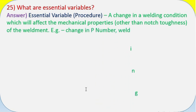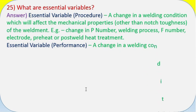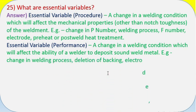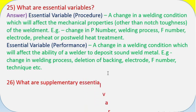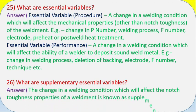Question 25: What are essential variables? Answer: Essential variable procedure - a change in a welding condition which will affect the mechanical properties other than notch toughness of the weldment, e.g., change in P number, welding process, F number, electrode, preheat, or post weld heat treatment. Essential variable performance - a change in a welding condition which will affect the ability of a welder to deposit sound weld metal, e.g., change in welding process, deletion of backing electrode, F number, technique, etc. Question 26: What are supplementary essential variables? Answer: The change in a welding condition which will affect the notch toughness properties of a weldment is known as supplementary essential variable.